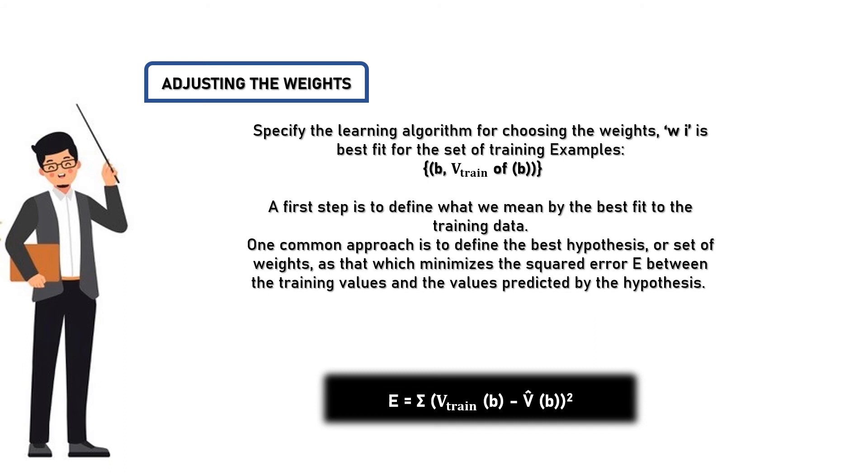Two: adjusting the weights. Specify the learning algorithm for choosing the weights wi that best fit the set of training examples (b, Vtrain(b)). A first step is to define what we mean by the best fit to the training data. One common approach is to define the best hypothesis or set of weights as that which minimizes the squared error E between the training values and the values predicted by the hypothesis: E = Σ(Vtrain(b) - V̂(b))².